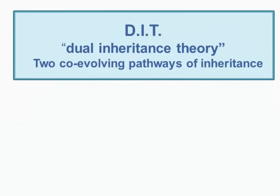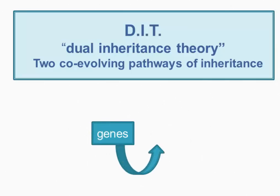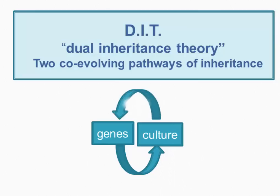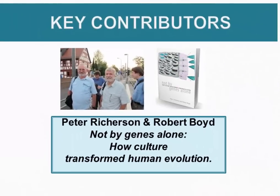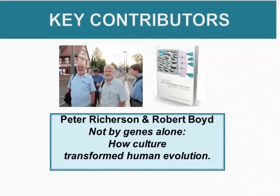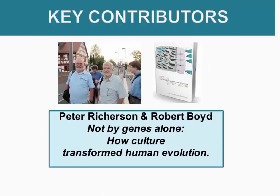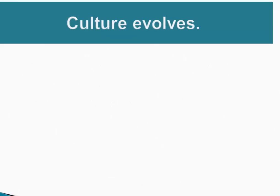This discussion belongs within the framework of dual inheritance theory, which stresses that there are two co-evolving pathways of inheritance: one is genetic and the other is cultural. The key contributors, Pete Richardson and Robert Boyd, have already been introduced, and we're going to focus on their book 'Not by Genes Alone: How Culture Transformed Human Evolution.'